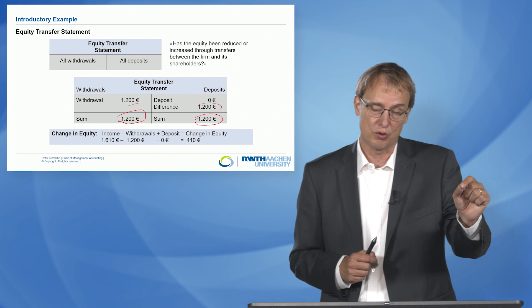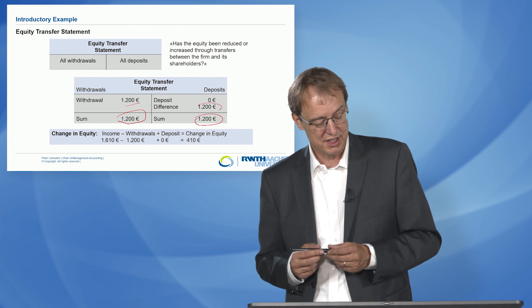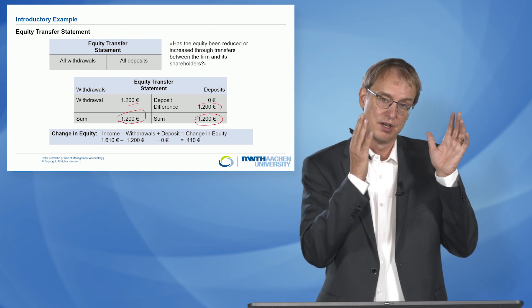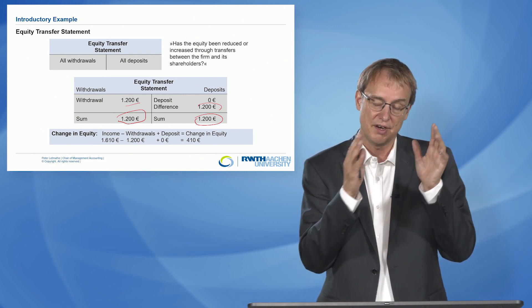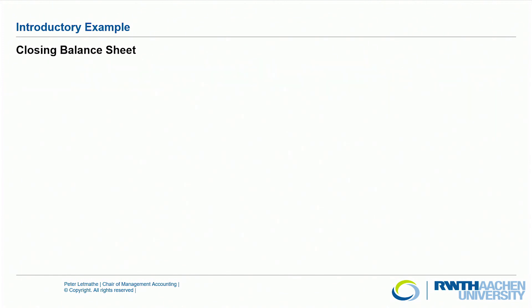Now we can calculate the overall change in equity. We have income of 1,610 euros and withdrawals of 1,200 euros with no deposits. This leads to a positive change in equity of 410 euros, which we will see reflected in the closing balance sheet.